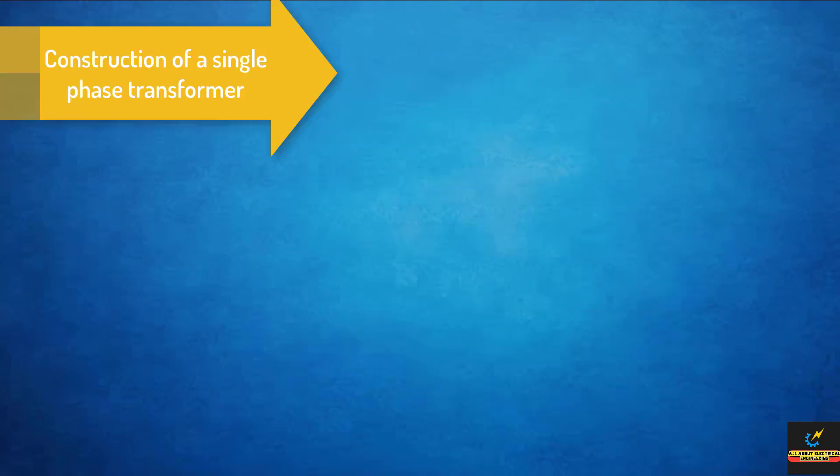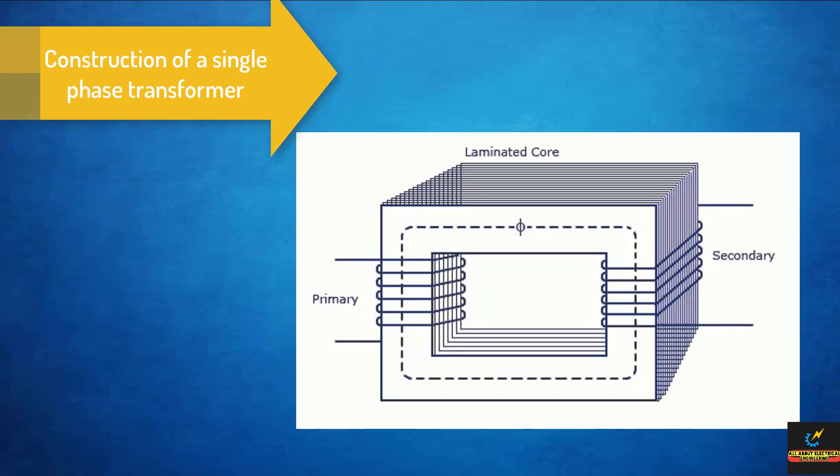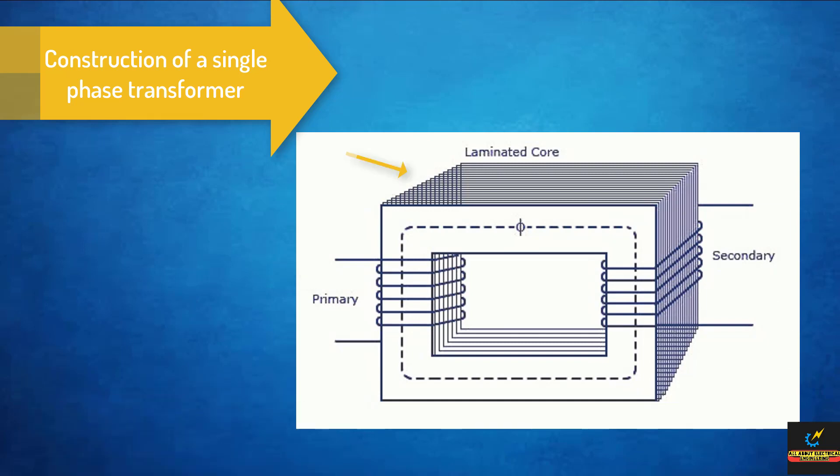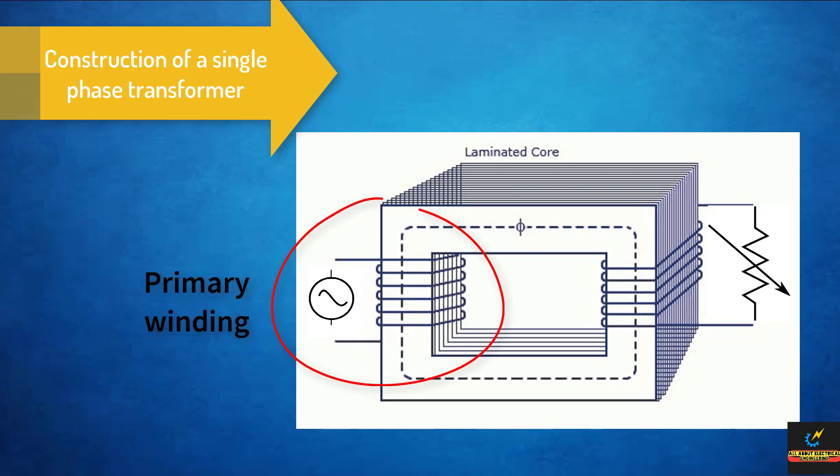Now we see the construction of a single phase transformer. It consists of two windings, the primary and secondary. The two windings wound on a common laminated magnetic core. Which of the winding connected to the AC source is called primary winding.